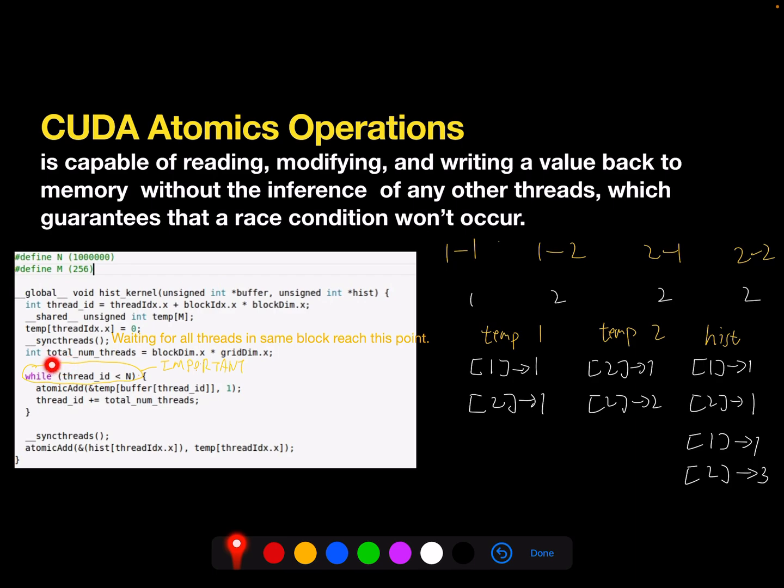Then here I calculate the total number of threads by multiplying the number of threads in block and the number of blocks in grids. Then here we enter into a while loop. This while loop is super important, but I'm not going to expand right now. Let me go through the whole iteration of the curve first.